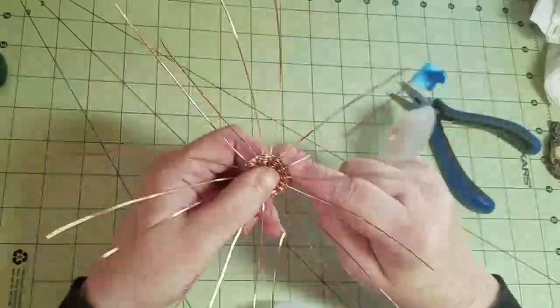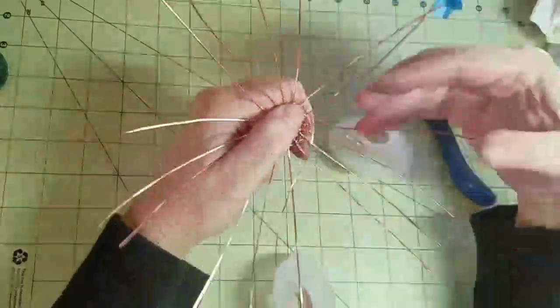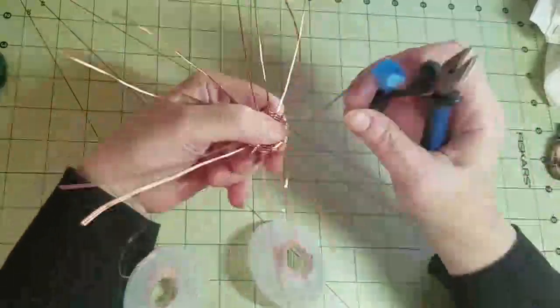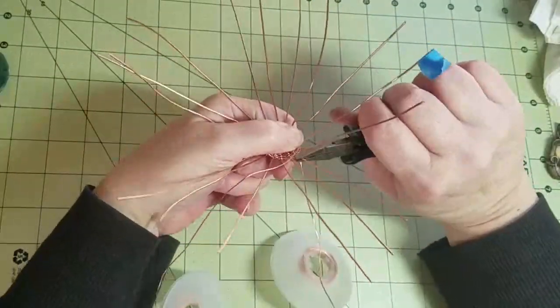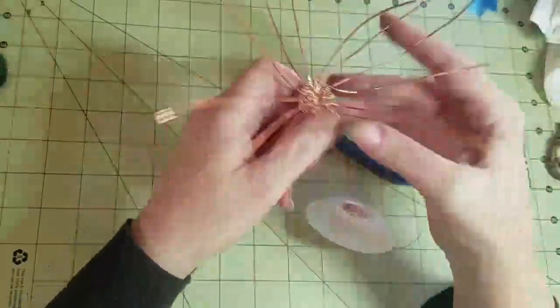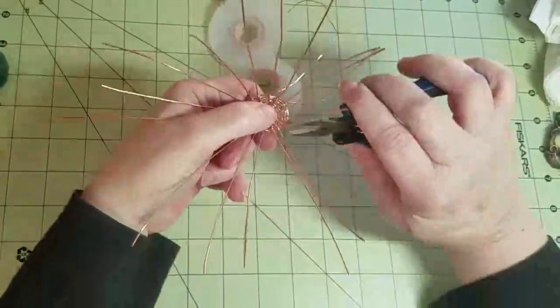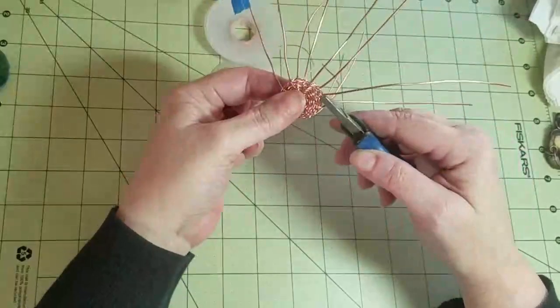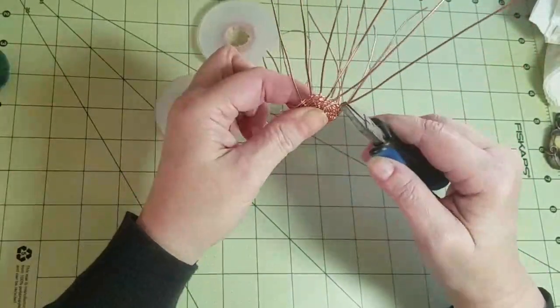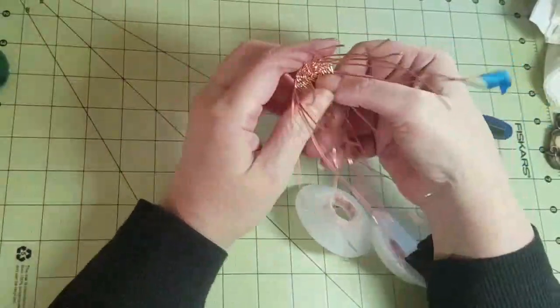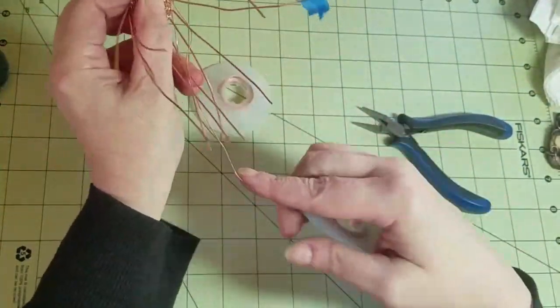Now we're going to bend these up to the angle of the basket that we want. We're just going to continue doing the same thing that we've been doing.